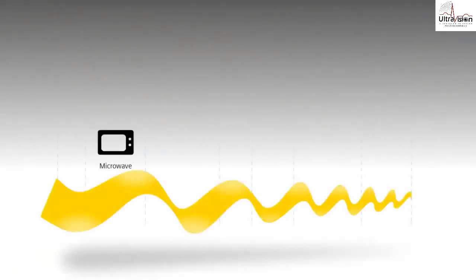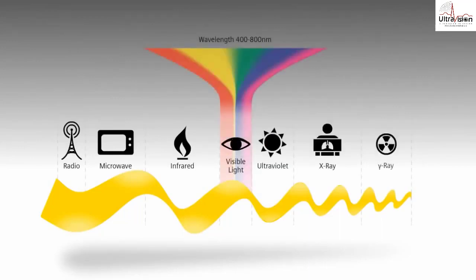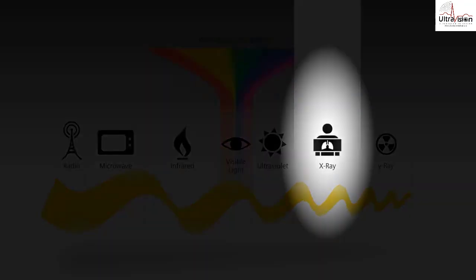Electromagnetic waves are used for lots of things like microwaves, radio waves, and even TV. We cannot see them, but these waves may be useful. Now these waves are what we call x-rays.